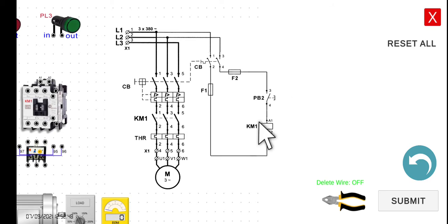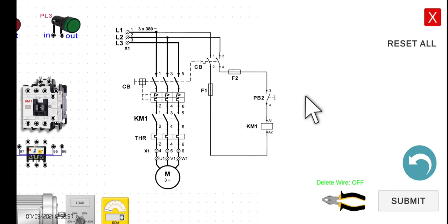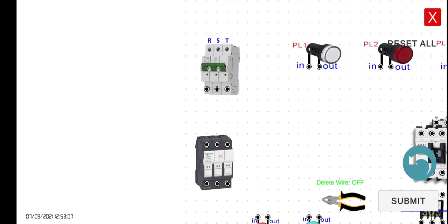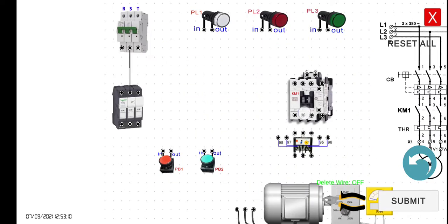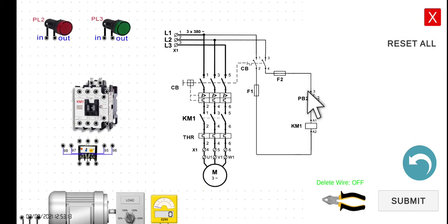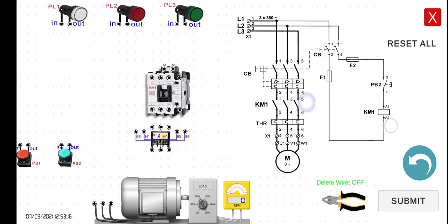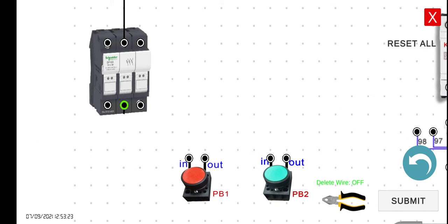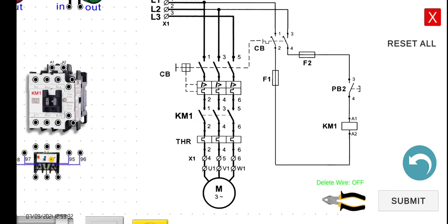So let's try to wire it first. This is the control circuit, and this one is the power circuit. Let's try to wire first the control circuit. We have to wire from line 2 to fuse 2 — the circuit breaker to fuse 2. After fuse 2, we have to connect this one to the input of our push button here, push button number 2.